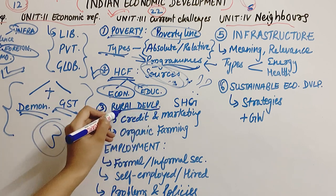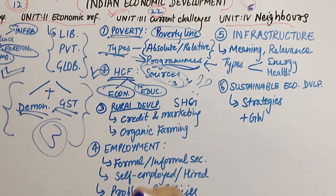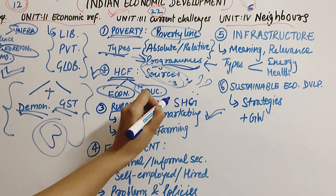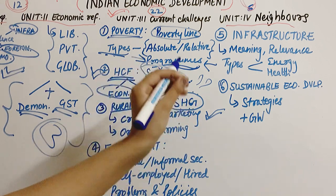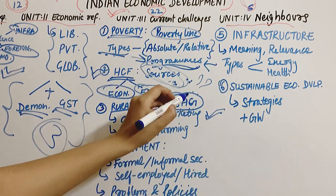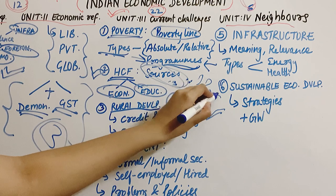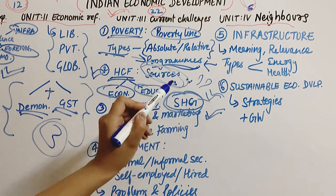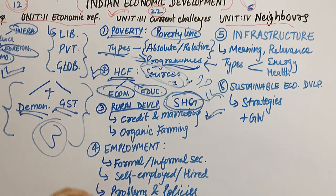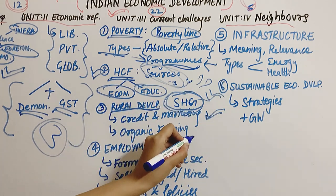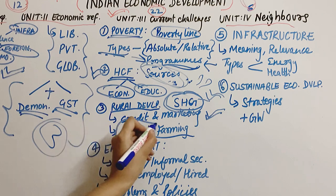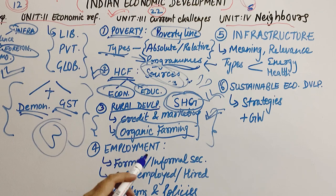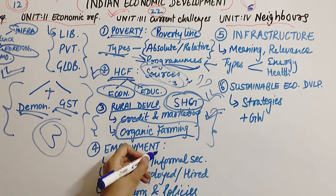The third chapter in Unit 3 is Rural Development. The most important topics are: number one, credit and marketing — especially self-help groups (SHGs), which is the most important topic from which exam questions are formed, along with cooperatives. The second important topic is sustainable development and organic farming. These two are the most important topics from rural development.